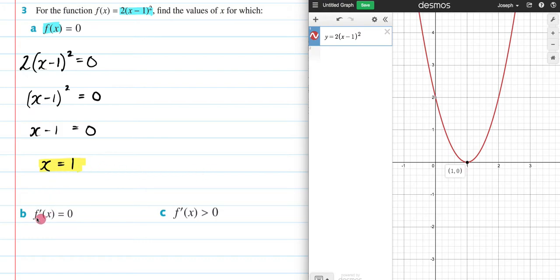Let's now move on to b and c. And as you can see, what we're doing is we're finding the values of x for when our derivative is equal to 0 or is greater than 0. We're dealing with the derivative.